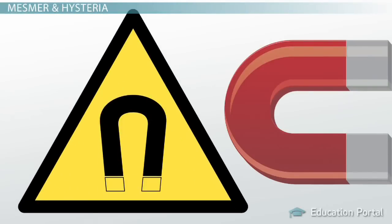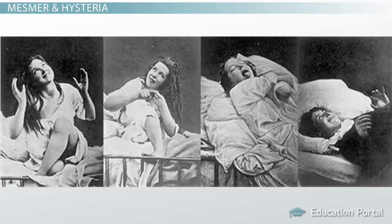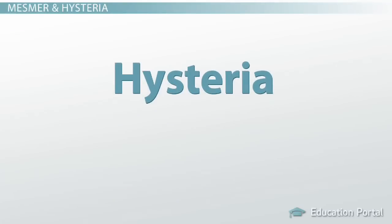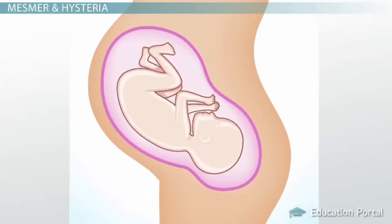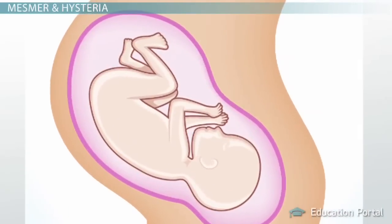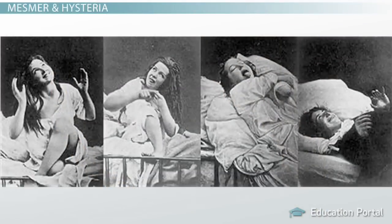In particular, Mesmer treated many conditions with magnets. At the time, hysteria was a common disease, particularly among women. Hysteria was the diagnosis when a patient experienced physical symptoms without anything physically wrong with them. One common belief among doctors of the time was that sometimes women's uterus could detach itself from where it was supposed to be and travel throughout the body, causing hysterical symptoms.